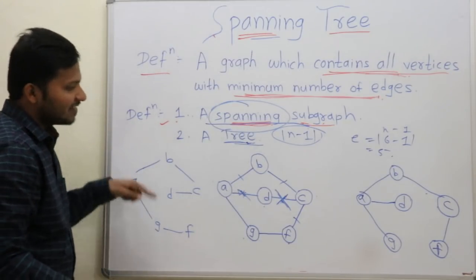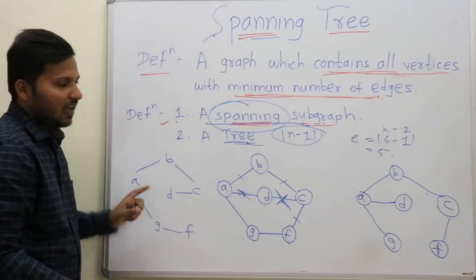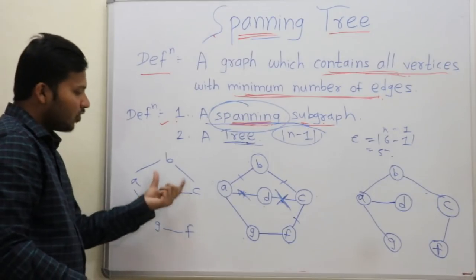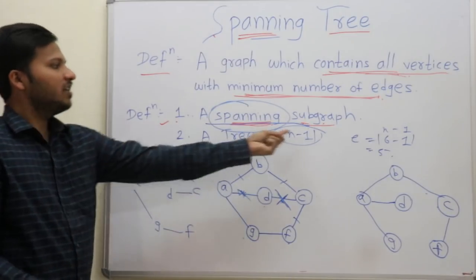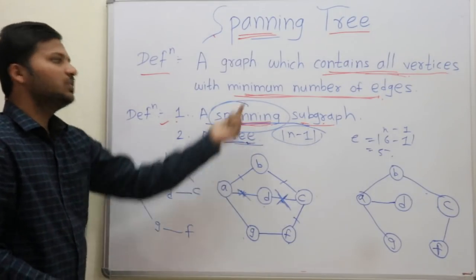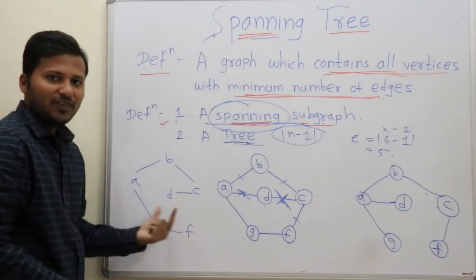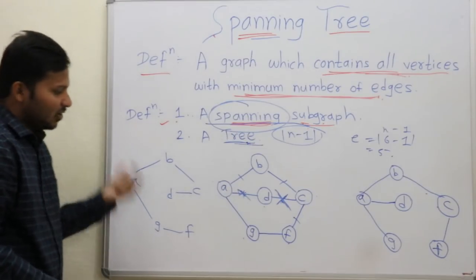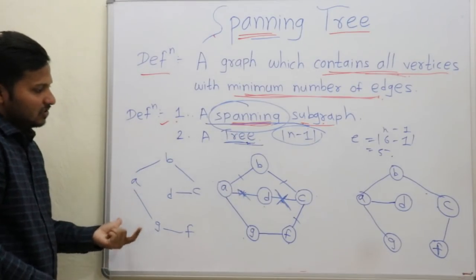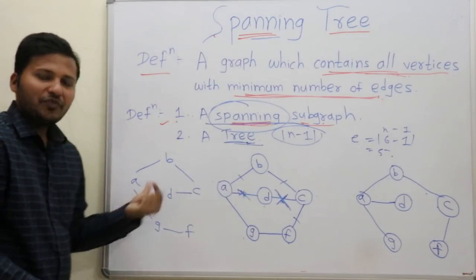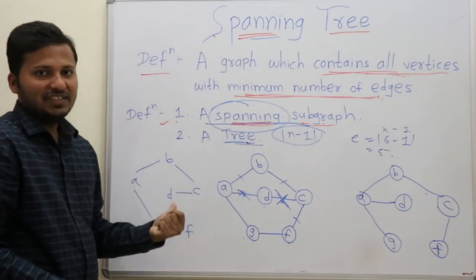All the vertices are covered and the number of edges are n-1 — that is the minimum number of edges. This is how we form a spanning tree.